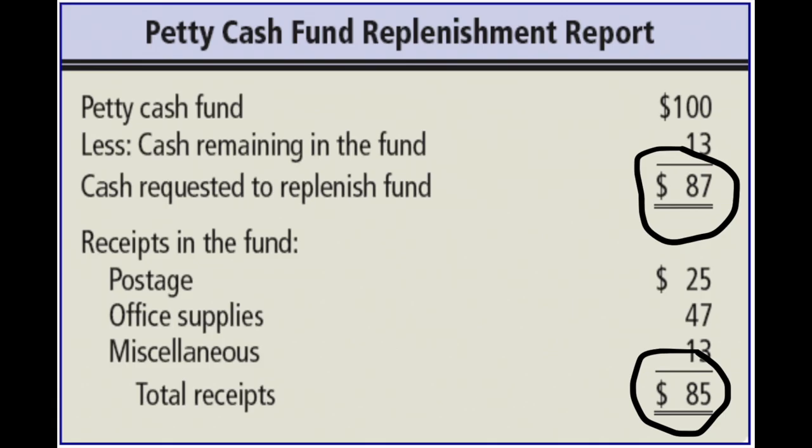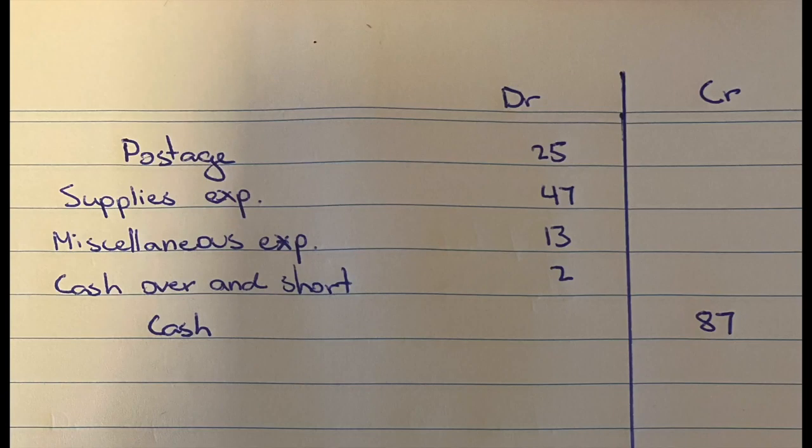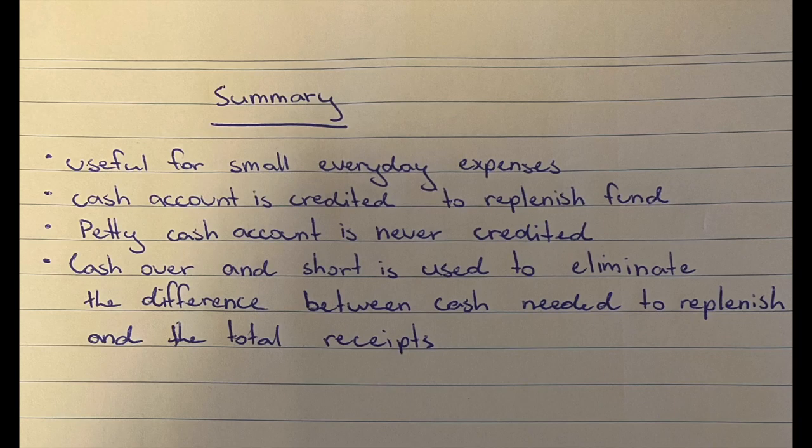To account for differences in the cash requested to replenish the fund and the total receipts, we use a cash over and short entry to account for the differences. If the cash on the receipts is short, then we debit cash over and short. If cash on the receipts is over, then we credit cash over and short. This is a separate journal entry used solely to account for any outstanding balances when replenishing the fund.